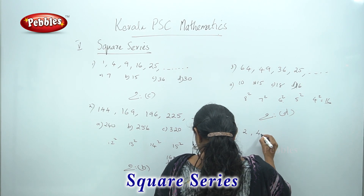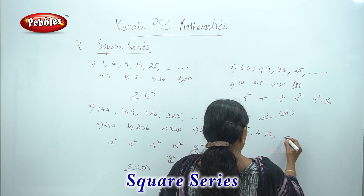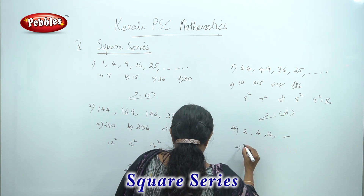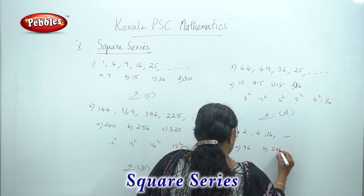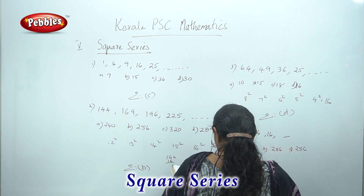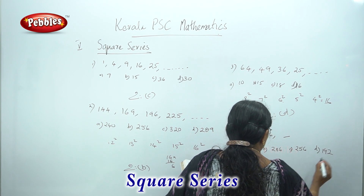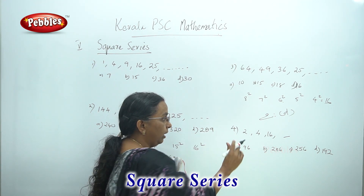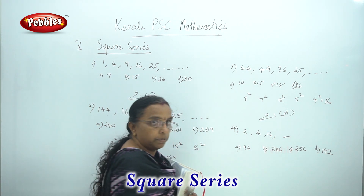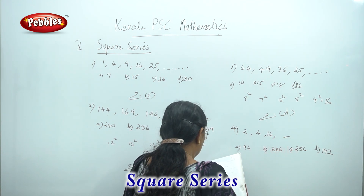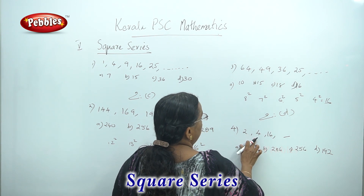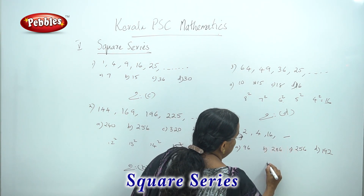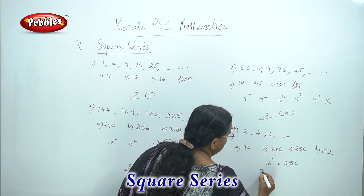The next question: 2, 4, 14 — dash. This is our question. The options are 99. We check: this is not a square, this is not a square. 4 is 2 squared, so this is the square.